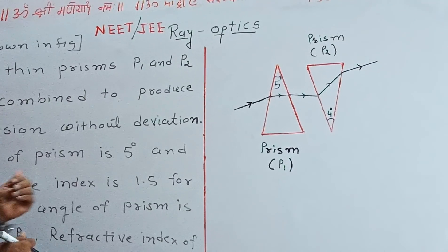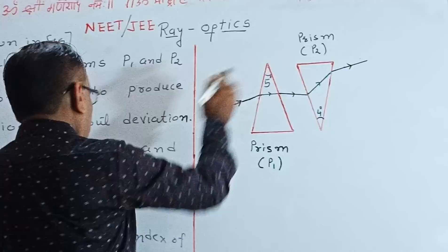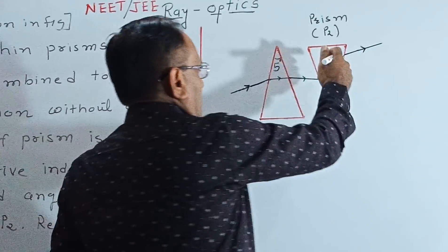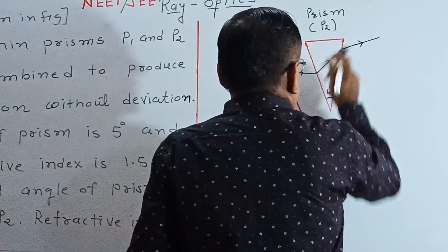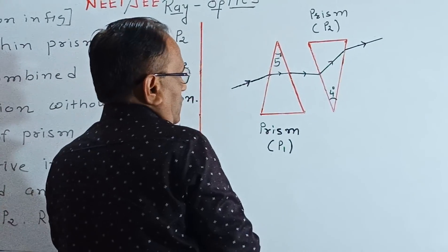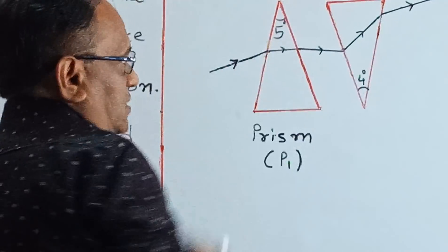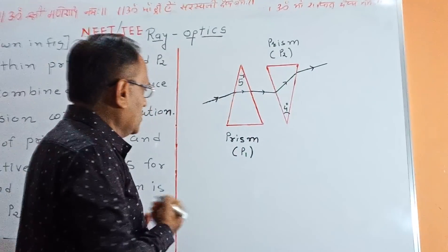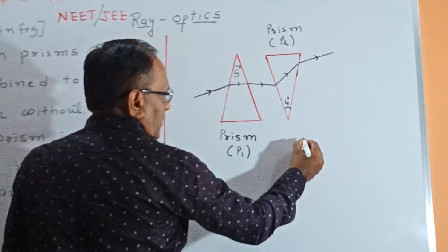The refractive index is 1.5 and the angle is 5 degrees for P1, and P2 is 4 degrees. It is not easy for solving all types of prism problems, so I give the best short trick for solving it.